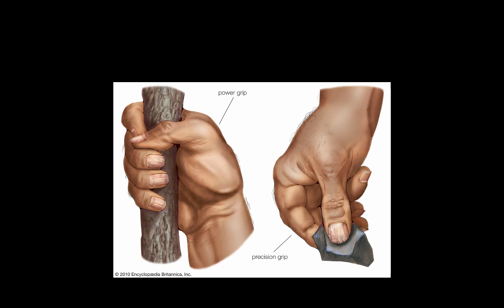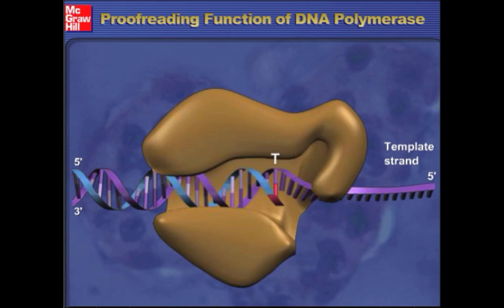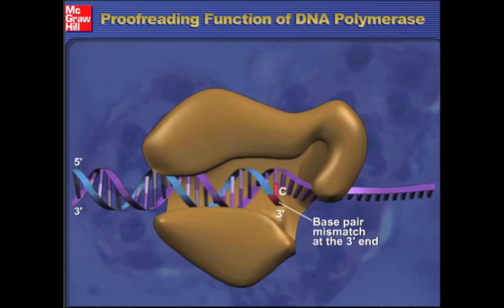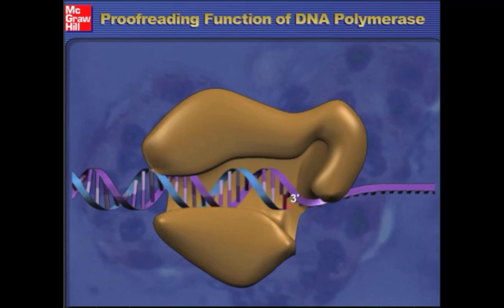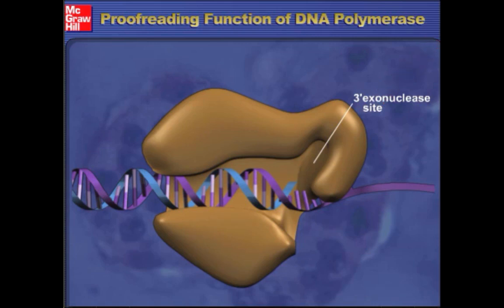This video shows how DNA polymerase proofreads as it goes. One out of every 100,000 to 1 million bases attached to the 3' end of a growing DNA chain will be a mismatch, improperly base pairing with the complementary strand. When such a mismatch occurs, DNA chain elongation generally pauses. This pause allows spontaneous melting of the end of the DNA strand being synthesized, freeing the 3' end with the mismatched base to enter a 3' exonuclease site on the DNA polymerase. The exonuclease site catalyzes the removal of several nucleotides from the 3' end of the growing strand. Only the removal of the nucleotide carrying the mismatched base is shown here, though additional nucleotides would actually be removed.